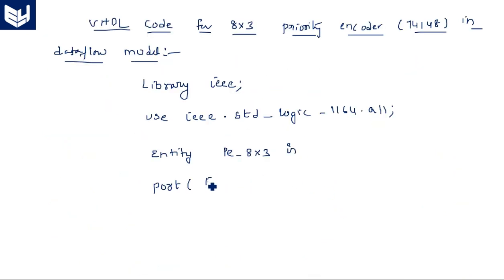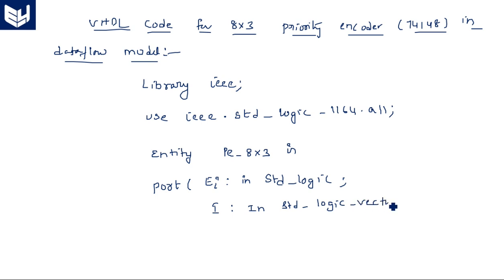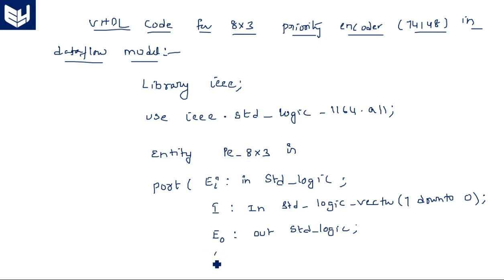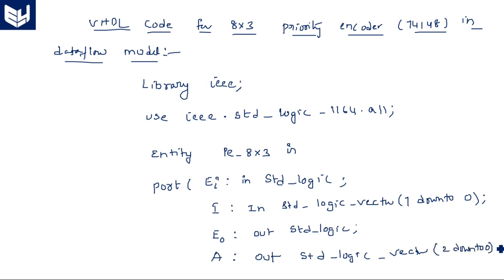In the port declaration: the enable input is a single-bit STD_LOGIC input. I is an input vector declared as STD_LOGIC_VECTOR of size 8 bits, so 7 downto 0. E_out is a single-bit STD_LOGIC output. A is an output declared as STD_LOGIC_VECTOR of 2 downto 0.